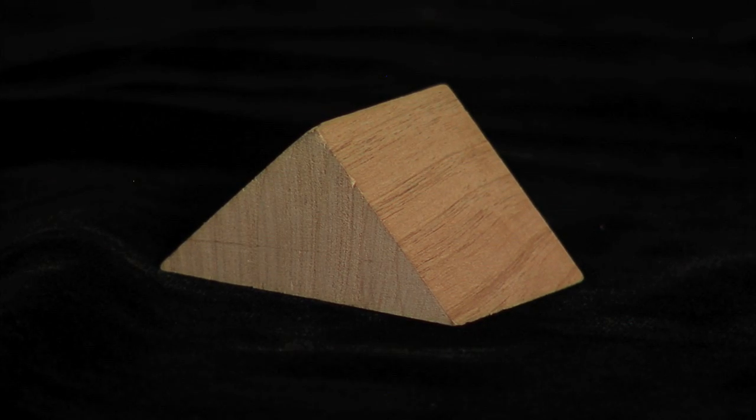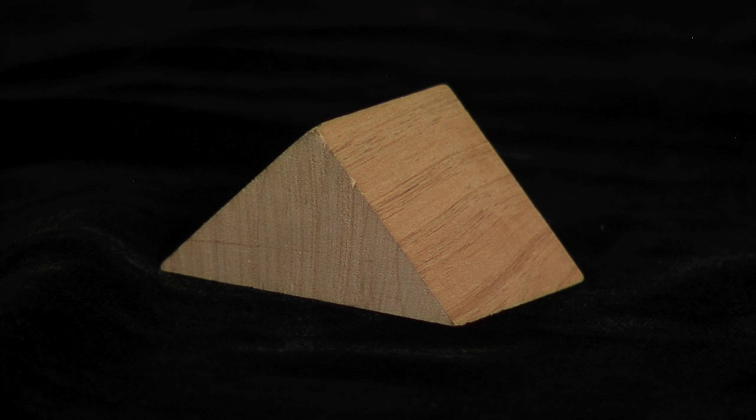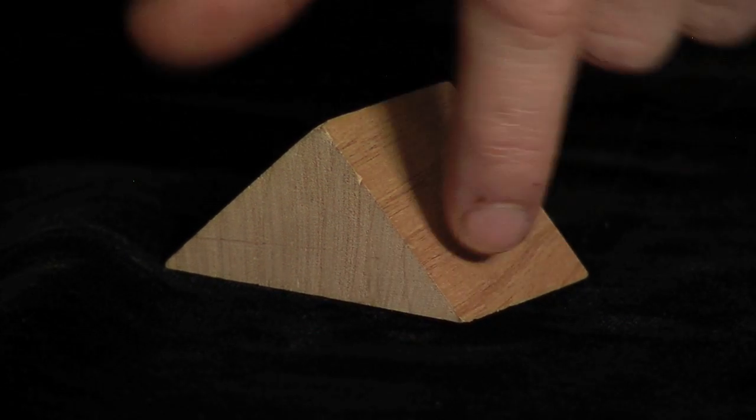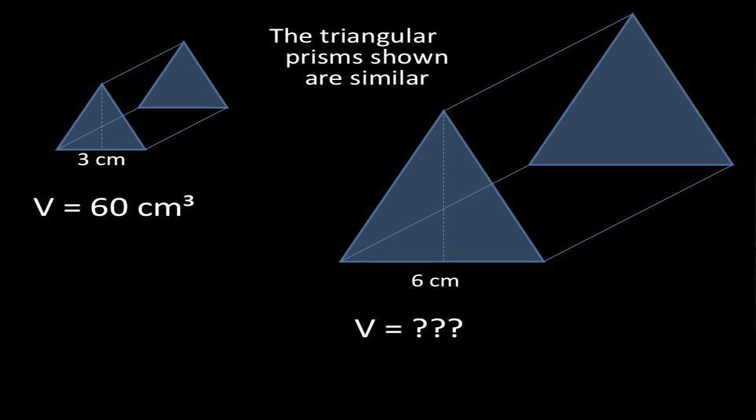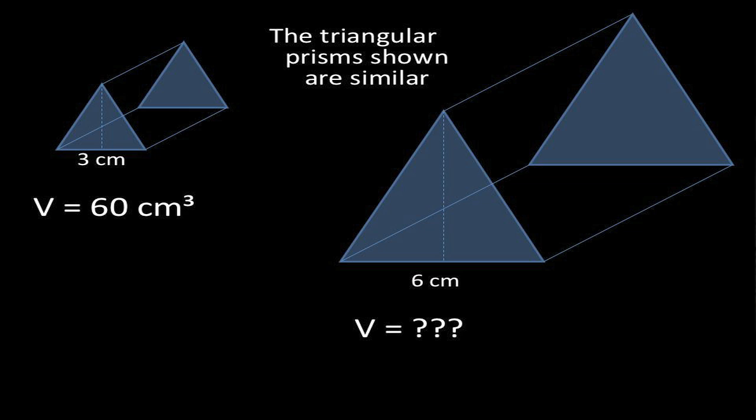A triangular prism is a 3D figure with two parallel bases that are triangles. The length of the triangle is three centimeters in the small prism and six centimeters in the larger one. That tells us that we have the scale factor of two because we multiplied the length of the small one by two to get the bigger one.